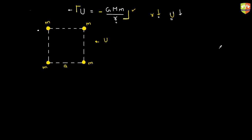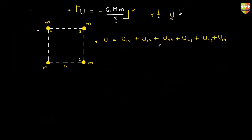The hint is: take two masses at a time and add all the potential energies. Potential energy is a scalar, so no direction issues. You need to consider: u12, u23, u34, u41 — the adjacent pairs — and also the diagonals u13 and u24. You can apply combinatorics: 4C2 gives six combinations. Since u12 equals u23 equals u34 equals u41, you can just find one and multiply by four. So this will be minus four times G m squared by a.